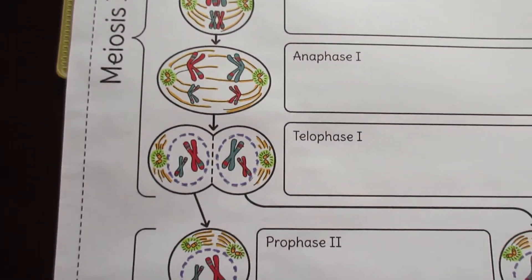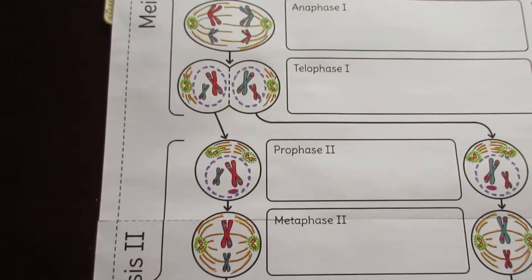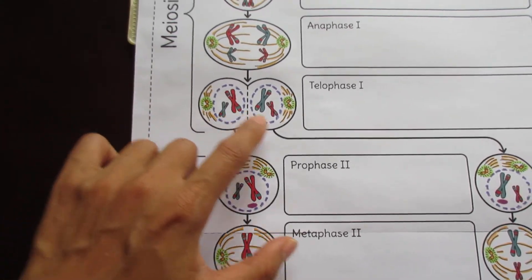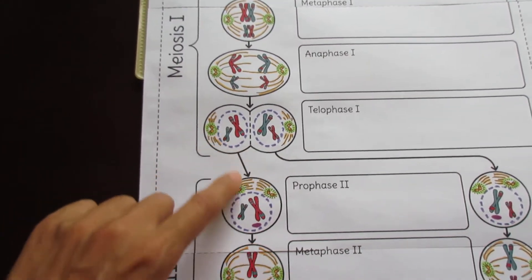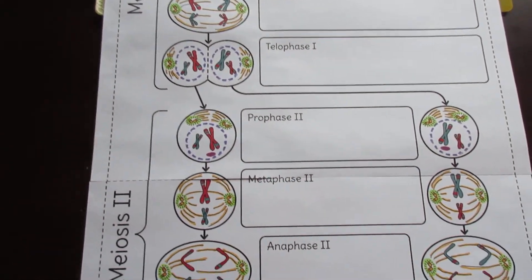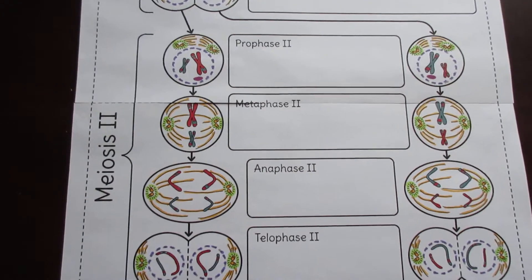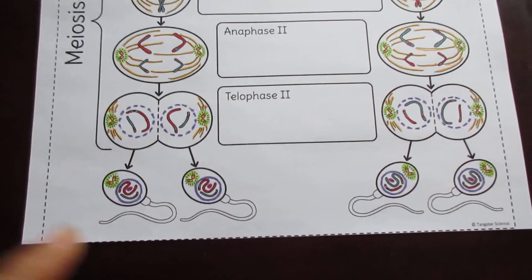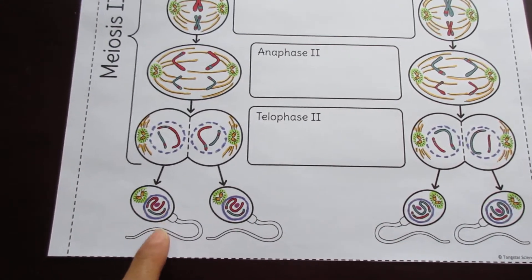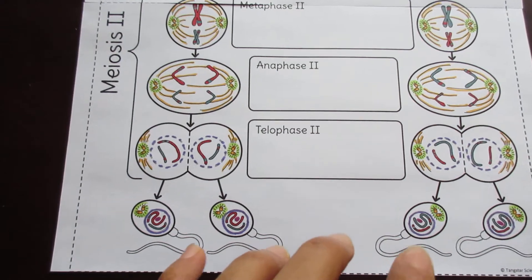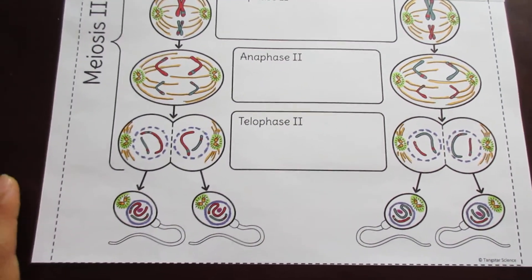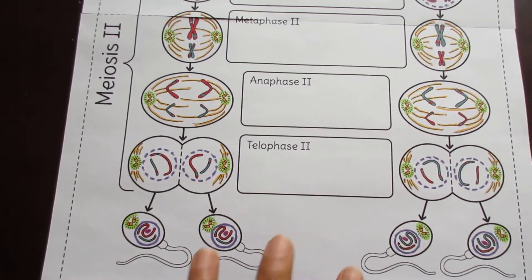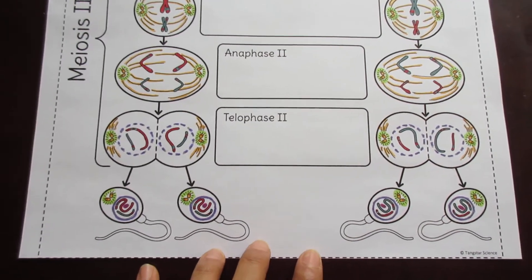Once you get to the end of Meiosis I, you begin Meiosis II. Many diagrams, especially on one page, don't have enough room to show what happens to each of the cells after Telophase I — they just show one. But here I show both, and I think showing both really helps students understand meiosis better and know that at the end, in the case of spermatogenesis, you get four genetically non-identical sperm. If this were oogenesis, you'd end up with one large ovum and three polar bodies, but spermatogenesis is the easiest to start with.